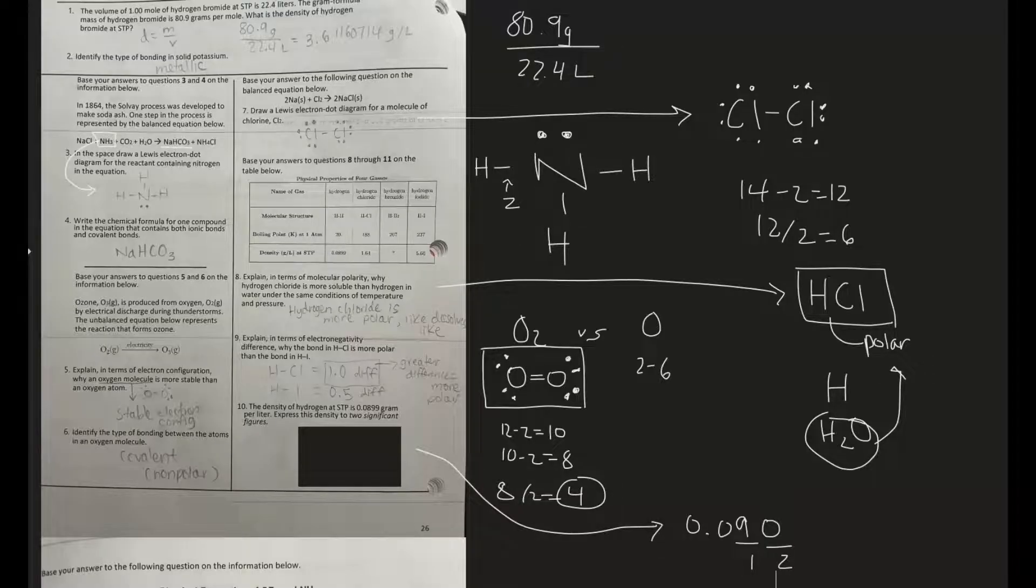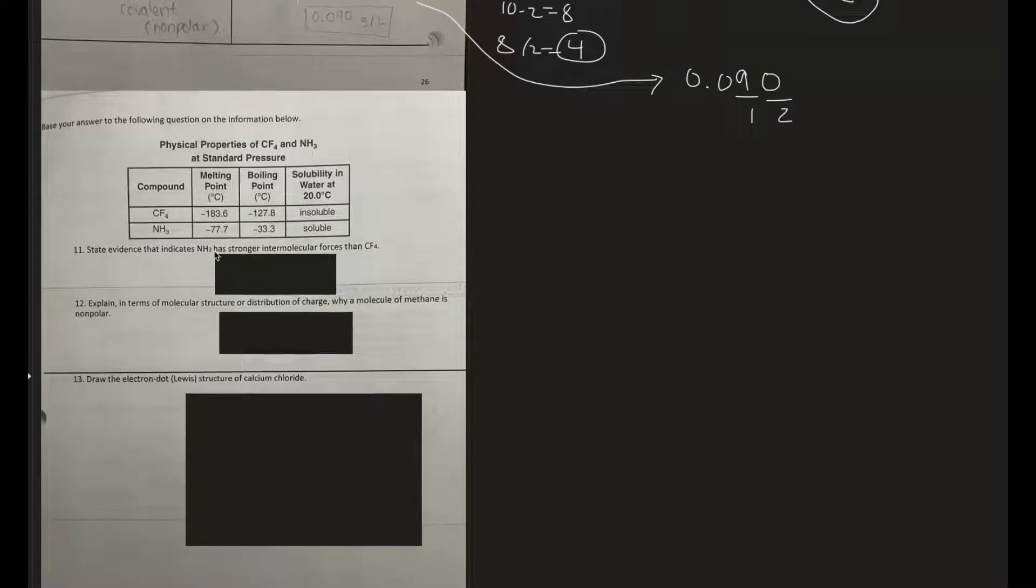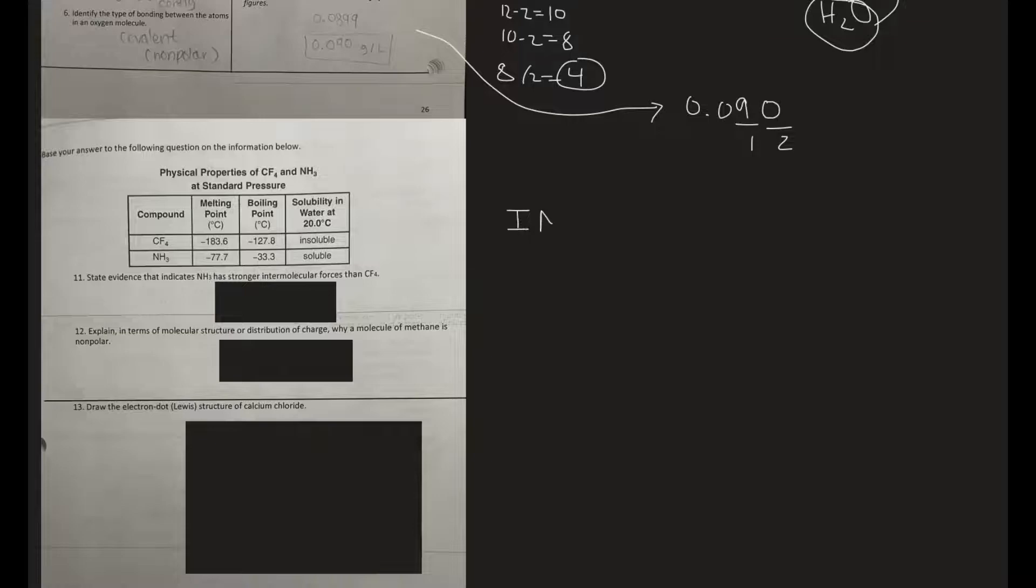Number 11: State evidence that indicates NH3 has stronger intermolecular forces than CF4. If it has stronger intermolecular forces, that means it's harder to break apart the bonds, and so its boiling point should be very high and its melting point should be very high as well. Let's look at their boiling points and melting points. Is NH3's boiling point higher? Negative 33.3 is indeed higher than negative 127.8. Is the melting point higher? Negative 77.7 is indeed greater than negative 183.6.